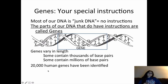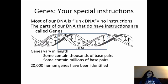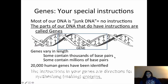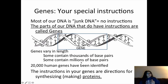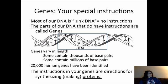So far, we've discovered about 20,000 genes in human DNA. So out of those three billion base pairs, we have found 20,000 different sections of our DNA that have instructions for making a protein. The instructions in your genes are for building proteins, and those proteins will determine traits, what happens in your cells on a daily basis, and what you can pass on.